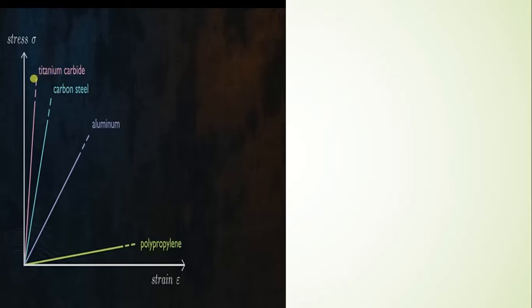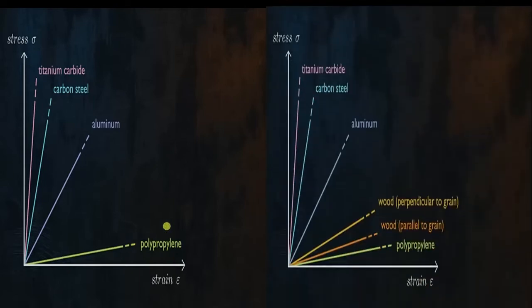Young's modulus values vary across materials: titanium carbide has the highest Young's modulus, followed by carbon steel, then aluminium, and polythene has a much lower Young's modulus. This graph is obtained from a tensile test in a mechanics lab. Note that the rock tensile test is performed differently from a metal tensile test — rocks use the Brazilian method.